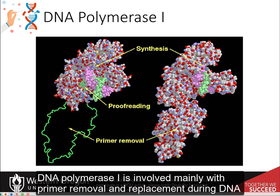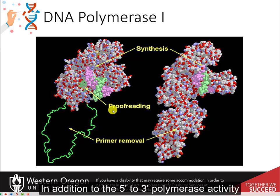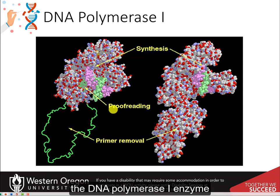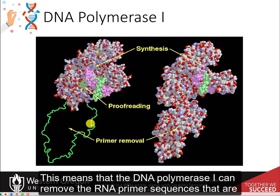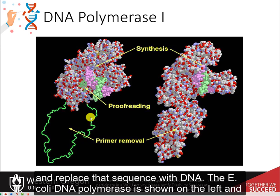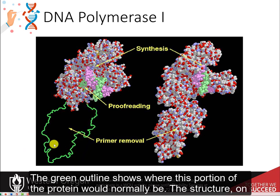DNA polymerase 1 is involved mainly with primer removal and replacement during DNA replication, as well as with DNA proofreading. In addition to the 5' to 3' polymerase activity and the 3' to 5' exonuclease proofreading abilities, DNA polymerase 1 also has 5' to 3' exonuclease activity. This means that DNA polymerase 1 can remove the RNA primer sequences that are laid down along the lagging strand during DNA replication and replace that sequence with DNA. The E. coli DNA polymerase is shown on the left, crystallized without the 5' to 3' exonuclease domain, and the green outline shows where this portion of the protein would normally be. The structure on the right is the full-length DNA polymerase 1 enzyme from Thermus aquaticus.